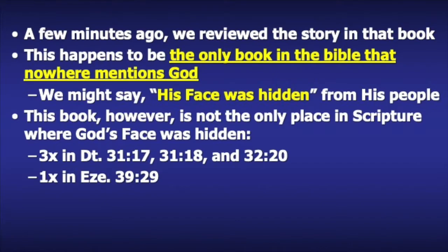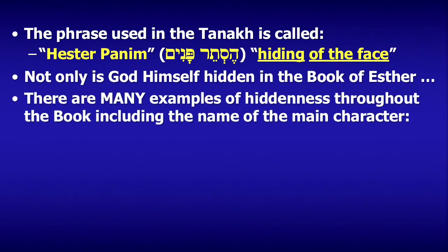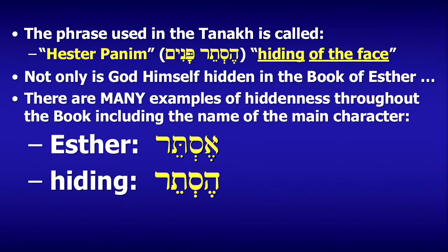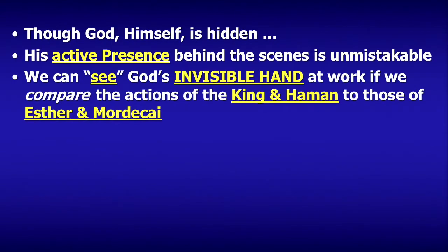Not only is God himself hidden in the Book of Esther, but there are many examples of hiddenness throughout the book, including the very name of the main character. Her name is Esther, and the Hebrew word for hiding is 'Hester' — her name itself means hiding. Though God is hidden in this book, his active presence behind the scenes is unmistakable. We can see God's invisible hand at work.